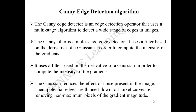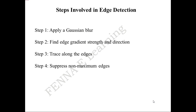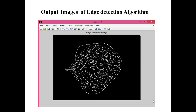After pre-processing, the canny edge detection algorithm is used to find the edge details of the image. The canny edge detection algorithm is based on the derivative of a Gaussian in order to compute the intensity of the gradients. The Gaussian filter reduces the effects of noise present in the images. The four major steps involved are: first, apply a Gaussian blur filter; second, find the gradient strength and direction of the pixels; third, trace the edges; and fourth, suppress the non-maximum edges. This is the output image obtained after the edge detection algorithm.